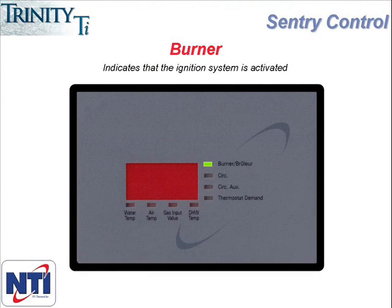Next we look at the burner light, which is lit whenever the ignition system is activated. During a call for either heat or hot water, if the controller has determined the boiler water temperature is too low, it will fire the burner to heat the water and this indicator light will come on. It's important to remember that just because the boiler is receiving a call, the burner doesn't automatically come on. The burner will only light when the boiler water temperature is below the set point minus the differential. Also remember that outdoor reset may be reducing the central heating set point. We'll cover set points, differential, and outdoor reset in a few minutes when we go through the configuration menu, but for right now, if this light is on, the burner should be lit.